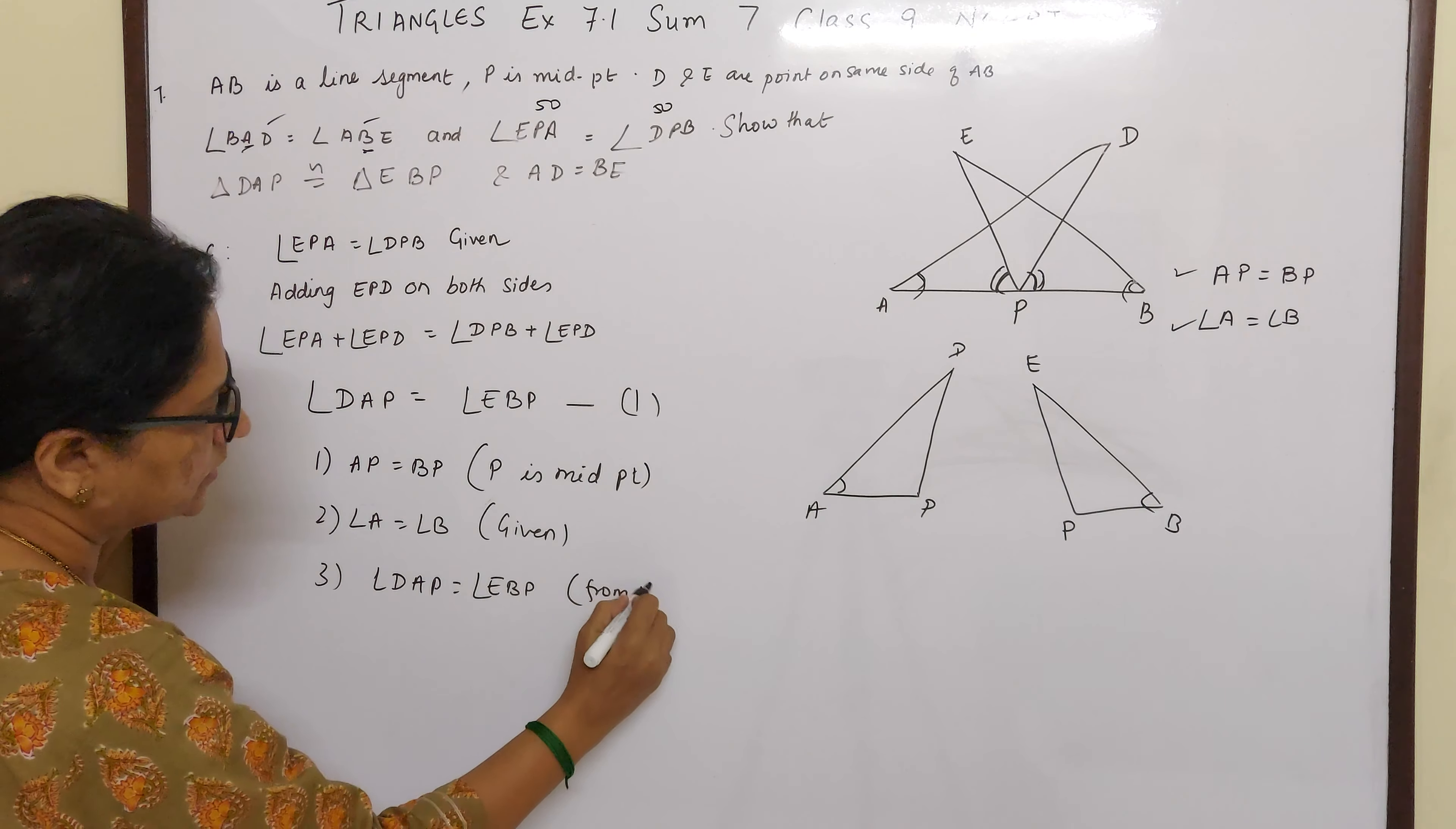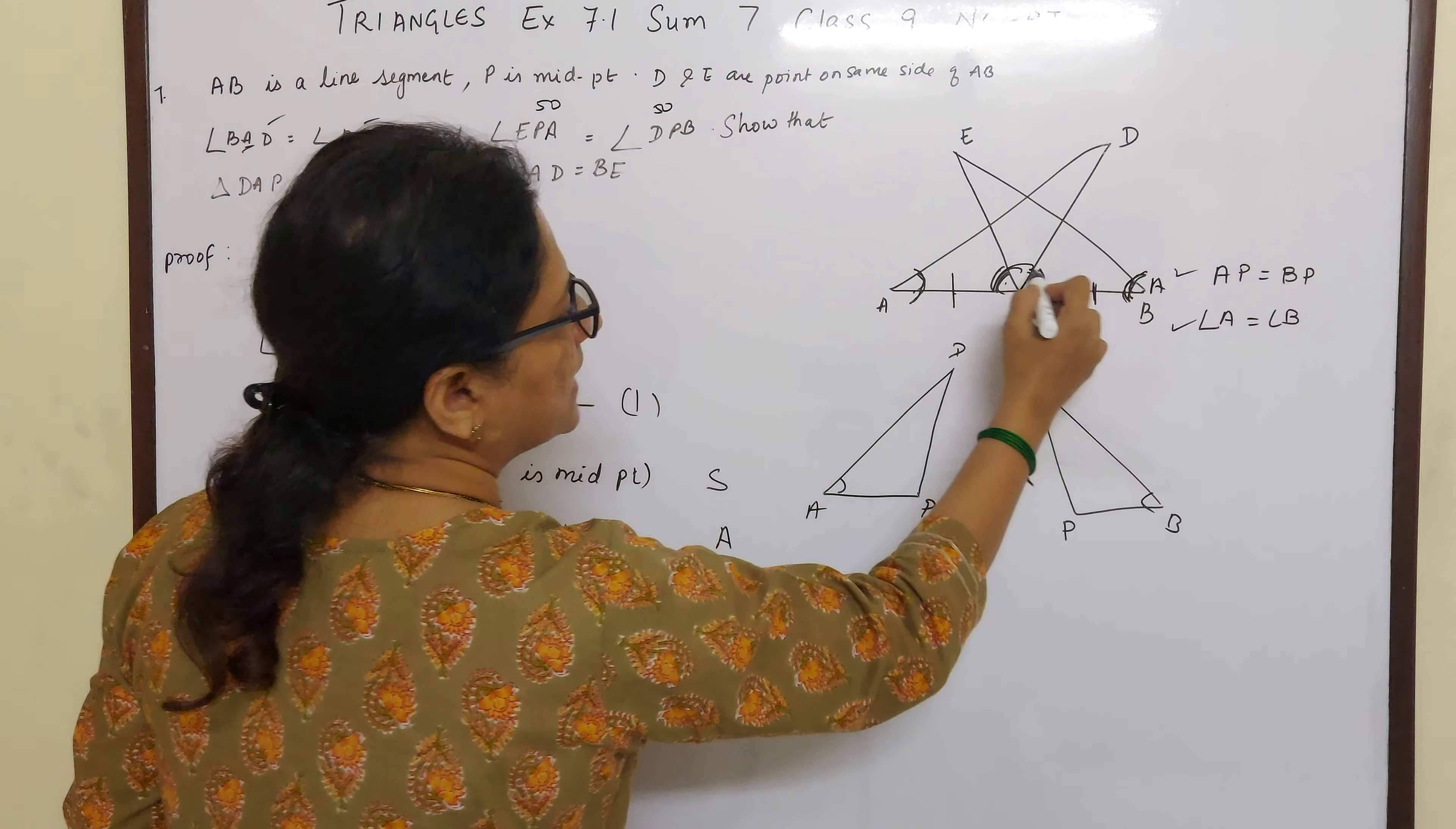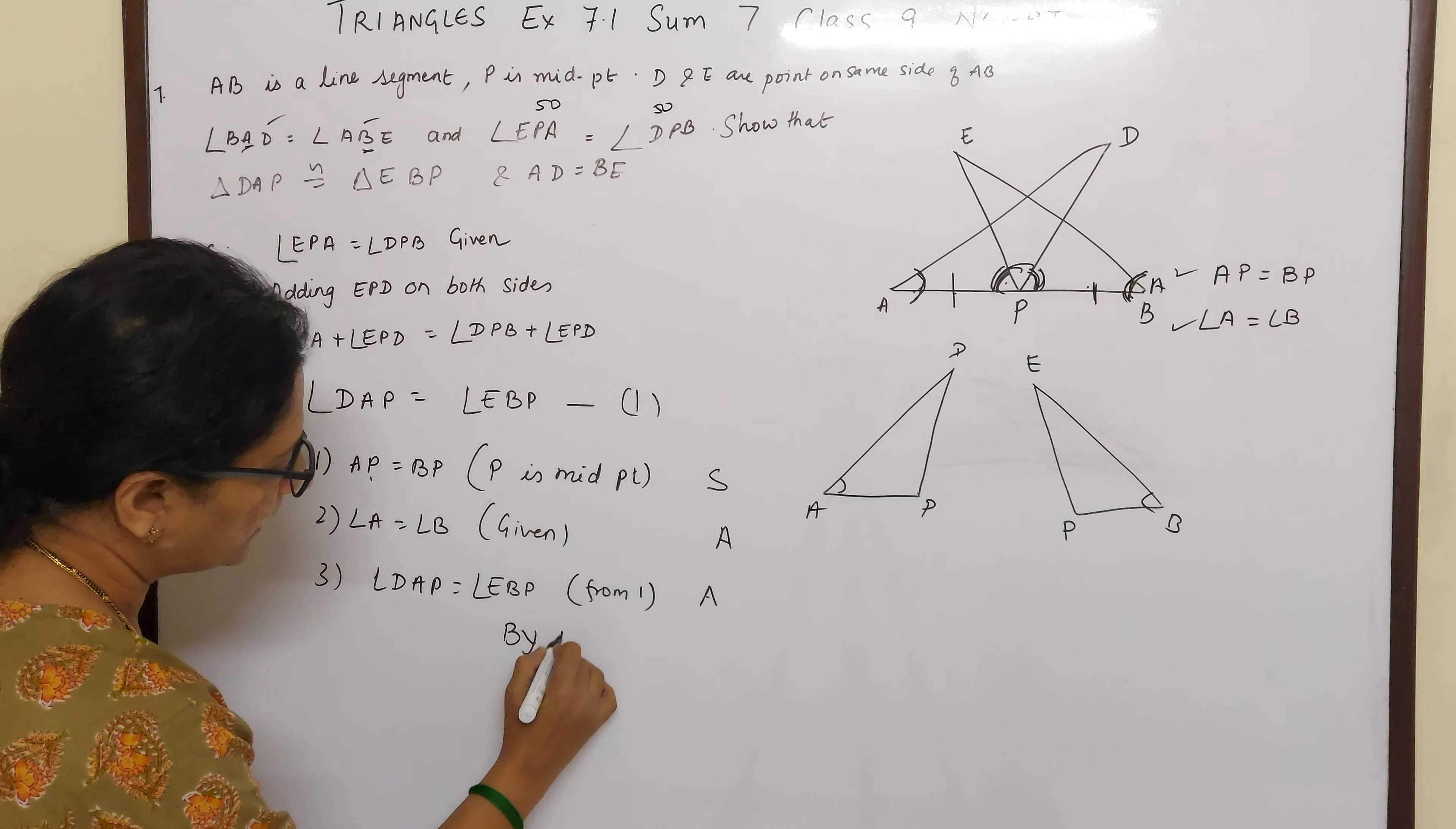So this is your side, this is your angle, and this is your angle. But we have to look at the pattern. So how do we go, children? Angle A, then AP is the side, and then DAP, this full is angle. So angle, side, angle. If you go from there also, BP is the side, angle B is one angle, and BP is the side, and then EBP. EBP is the angle. Angle, side, angle. So we can say by angle-side-angle, triangle DAP is congruent to triangle EBP.